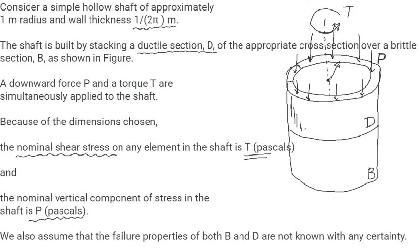Here we assume that the failure properties of B as well as D are not known with certainty. This property, this feature is going to make us use the fuzzy logic.